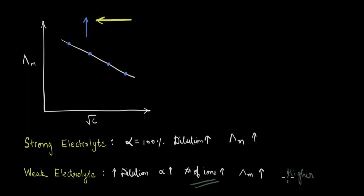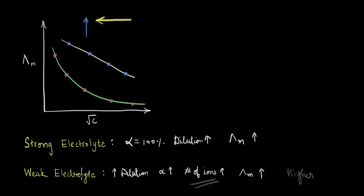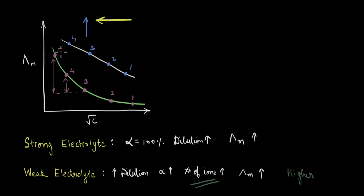For a weak electrolyte, the trend is again the same — on increasing dilution, the number of ions increases and therefore molar conductivity increases. When we plot the experimental data for a weak electrolyte, they follow a hyperbolic-type curve. As we move from right to left, concentration decreases and dilution increases, and the corresponding lambda m values — marked with pink dots — increase. One more thing to note: in the case of a strong electrolyte, as we go from points 1 to 4, the increase in molar conductivity is very gradual, but for the weak electrolyte curve, the change in values from 1 to 4 is much higher, consistent with what we saw before.